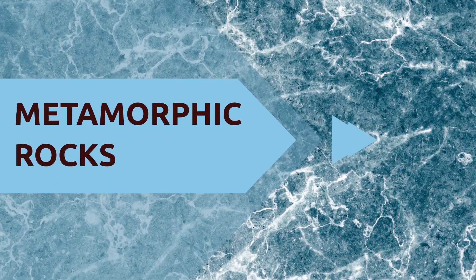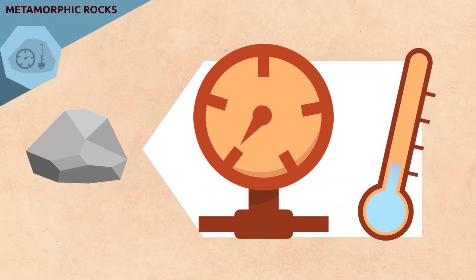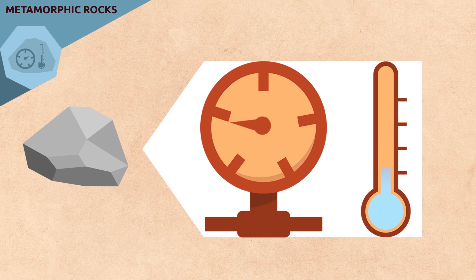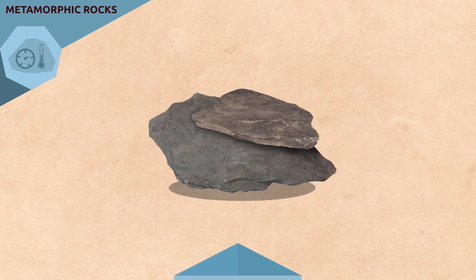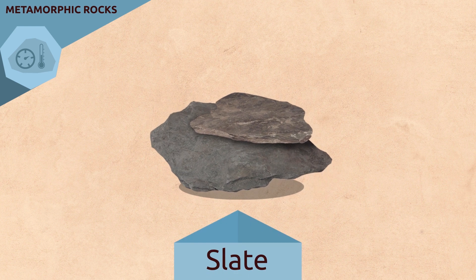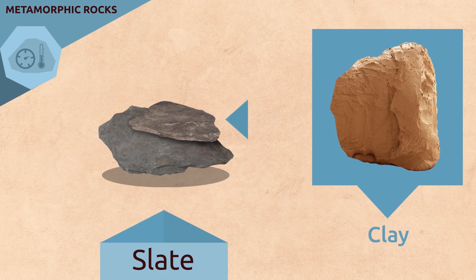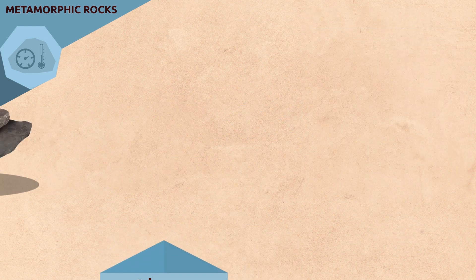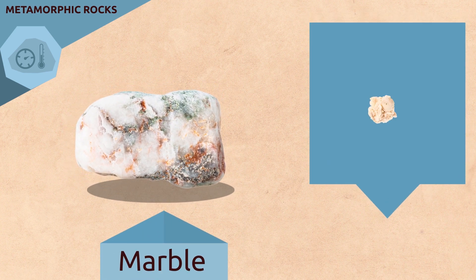And lastly, metamorphic rocks — these are formed by the transformation of other rocks under great pressure or heat. Like slate, for example, which is formed from clay, or marble, formed from limestone.